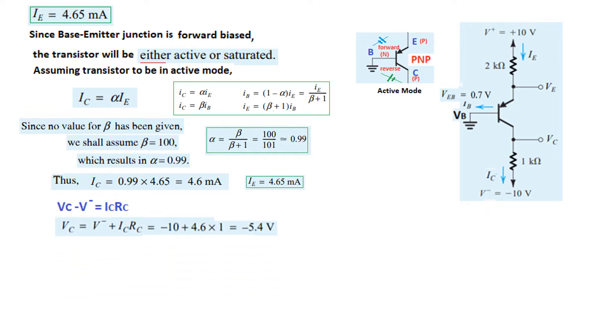IC found. Now, we can find the collector voltage VC. From here, you can see VC minus V minus is IC RC. From here, VC is minus 5.4 volt. So, this is minus 5.4 volt. And now, you can see that this is reverse bias because this is negative and this is 0. So, it is reverse bias. That means the transistor is definitely in active mode.